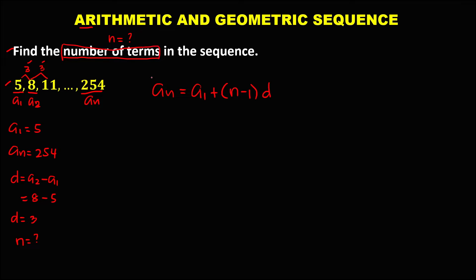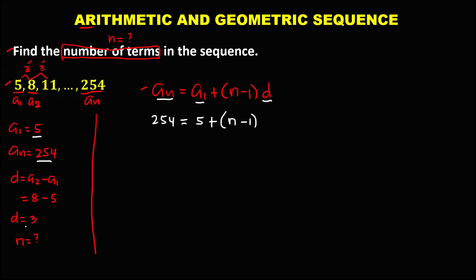To solve for n, the number of terms, substitute all the given values into the formula. So a sub n is 254, equals a sub 1 which is 5, plus the quantity of n minus 1 times the common difference, which is positive 3. To simplify, transpose positive 5 to the other side, so this becomes 254 minus 5 equals 3n minus 3.